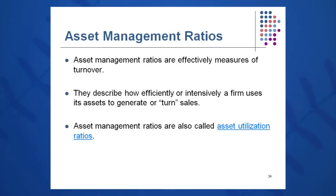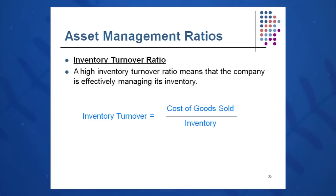Category number three is asset management ratios — how effectively are we using our assets to do good things in the company, to turn sales? We might call these asset utilization ratios. In category three, we'll talk about inventory management and accounts receivable management. We'll also look for mnemonics — easy ways to remember these without memorizing them — and I'll show you a pattern in a minute.